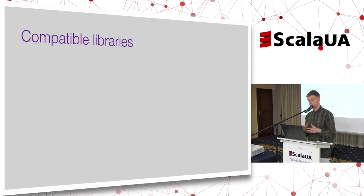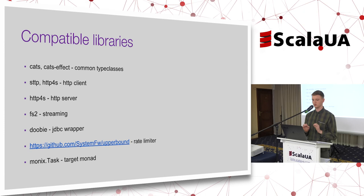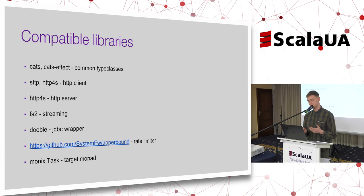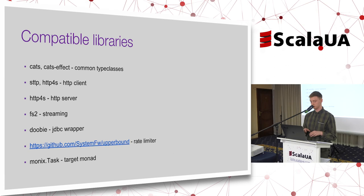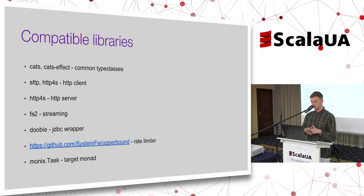If you write in this style there is a problem with putting more code in a functional manner and moving your side effects out of your code. Because in code that performs side effects, you lose all the proofs that functional programming gives you. But there are a bunch of libraries that can help you move your side-effecting code inside them and they will control it for you. HTTP4S is for dealing with HTTP. FS2 is for streaming. Doobie is a pure JDBC wrapper. There is also a rate limiter library, and Monix is a nice library with very good documentation that you can use as your target monad.